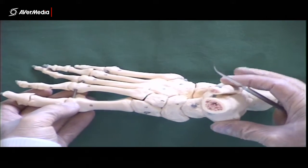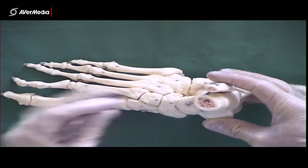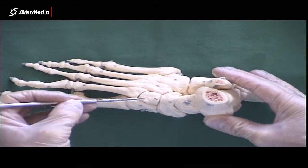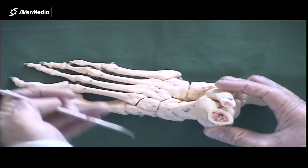We can turn the specimen over and look at the dorsal point of view where we can see medial, intermediate, and lateral, or first, second, and third cuneiforms, and then the cuboid bone.